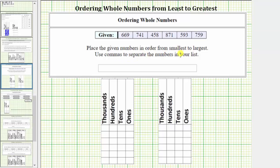We're asked to give the numbers in order from smallest to largest, or least to greatest. We're asked to use commas to separate the numbers in the list. To help us order the numbers from least to greatest, we will use the place value charts below. To begin, let's write all the numbers in this first place value chart.